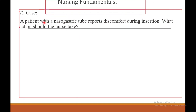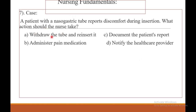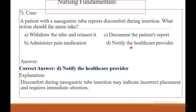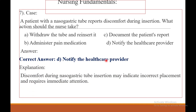Question number seven — nursing fundamentals. A patient with a nasogastric tube reports discomfort with the insertion. What action should be taken by the nurse? A — withdraw the tube and reinsert it. B — administer pain medications. C — document the patient's report. D — notify the healthcare provider. The answer is D — notify the healthcare provider.